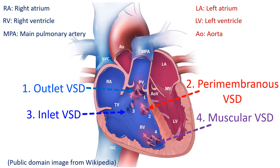Important locations of VSD are perimembranous, muscular, outlet, and inlet. Outlet VSD is near the outlet of the ventricles, near the origin of the great arteries.